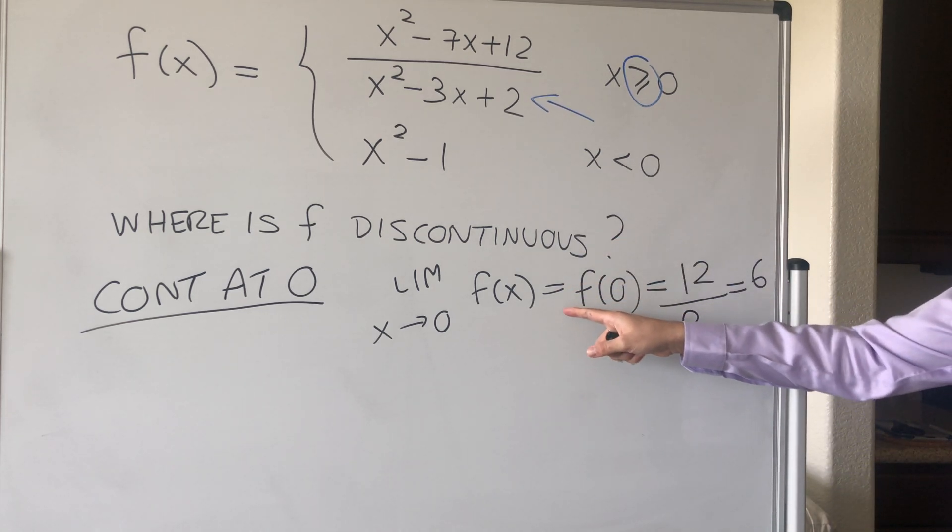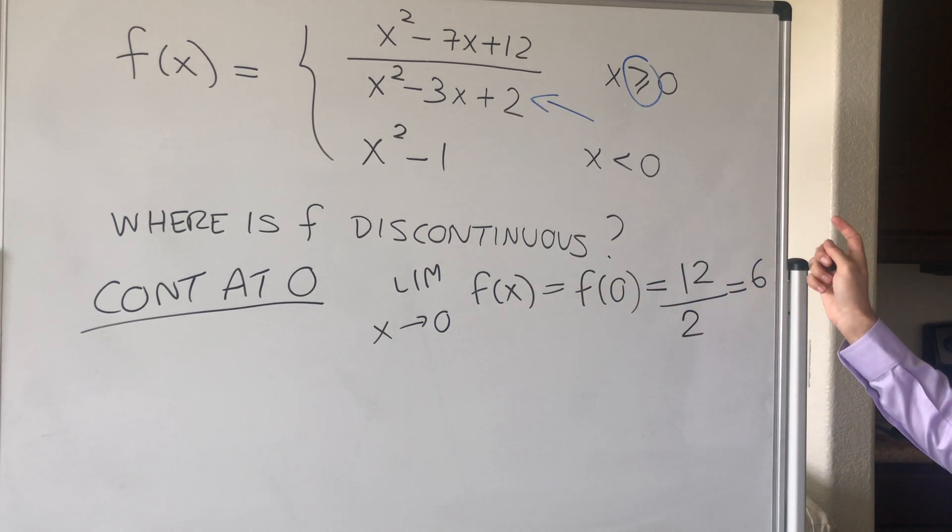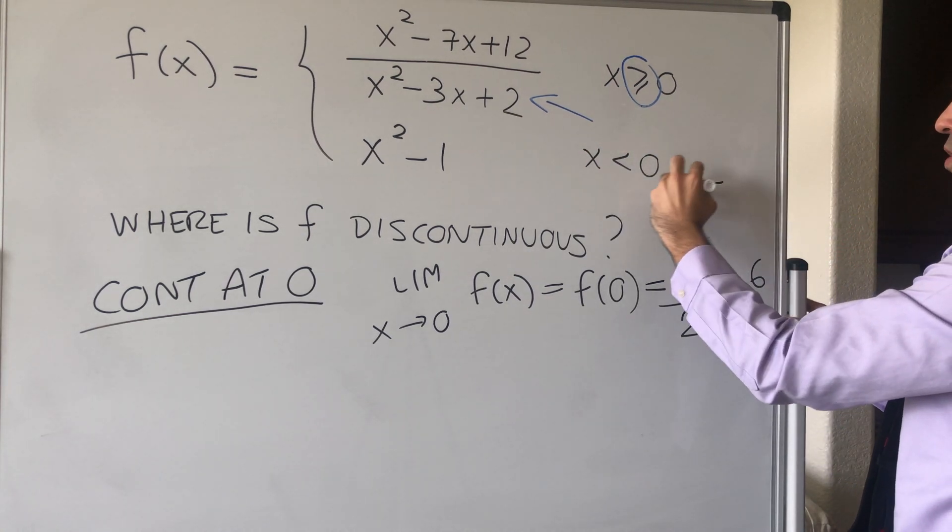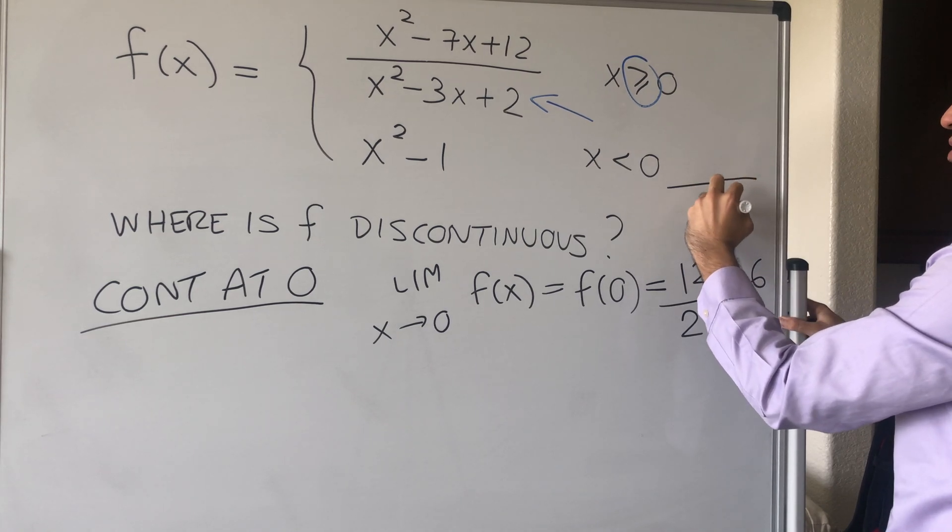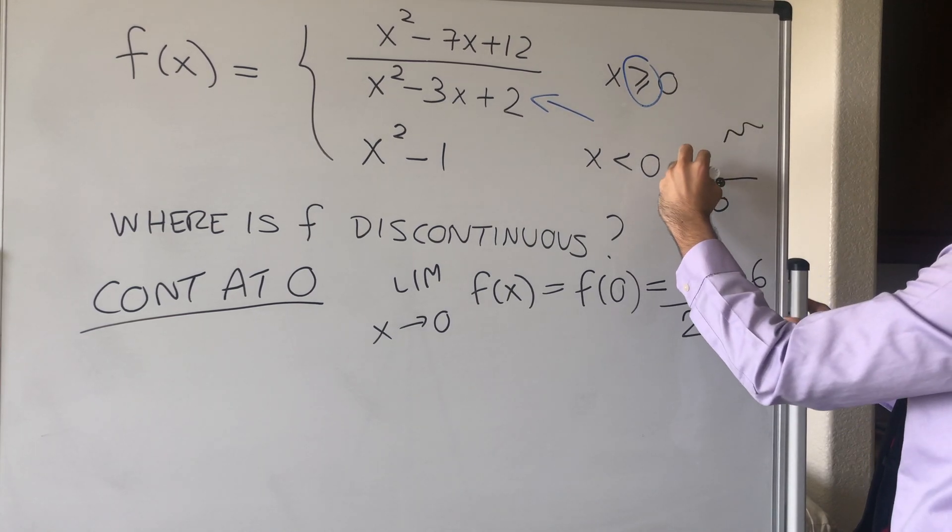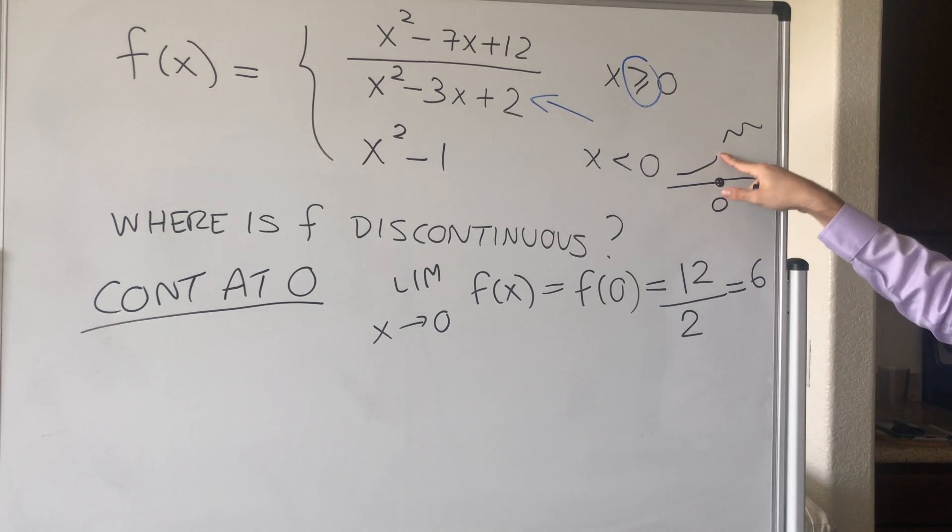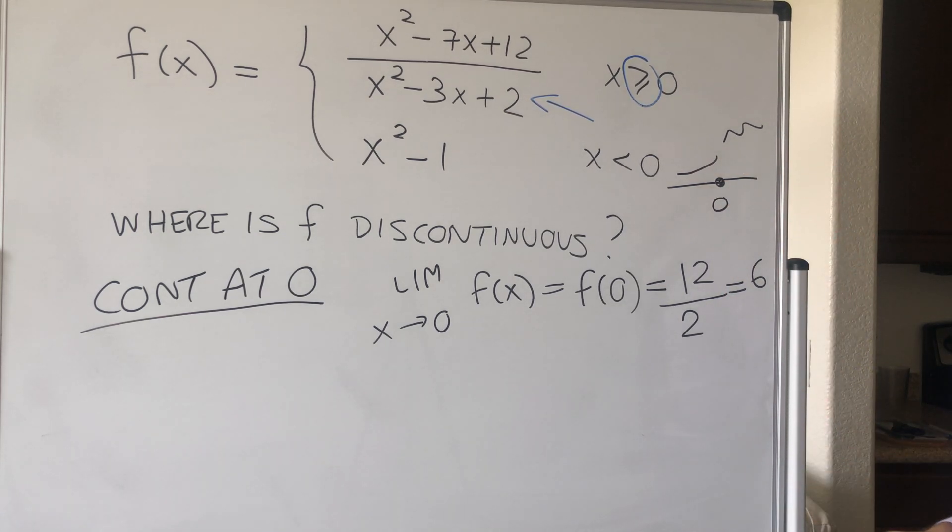And now, let's check if this limit equals 6. And because we have this two-sided thing, where the function changes at 0, we need to do the left-hand side and the right-hand side limit.